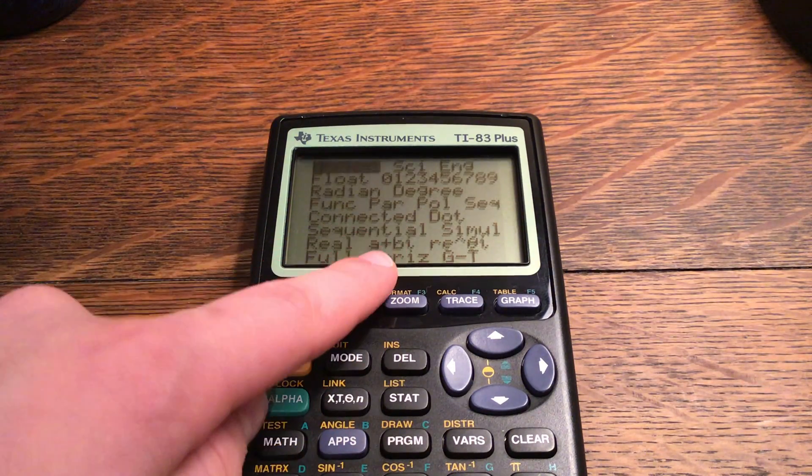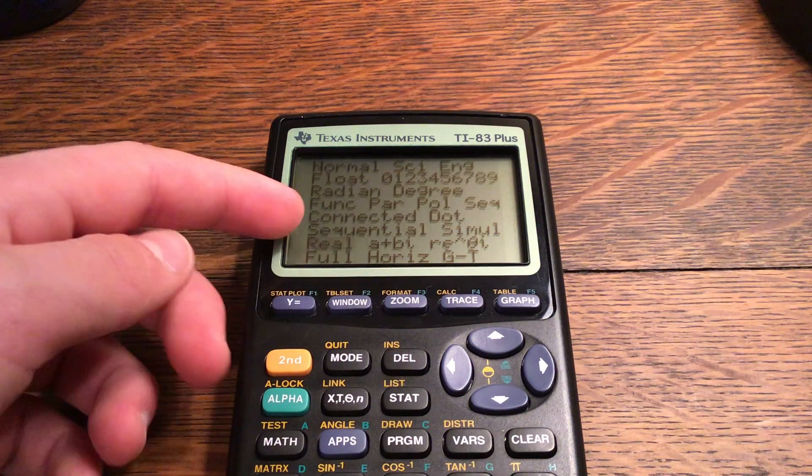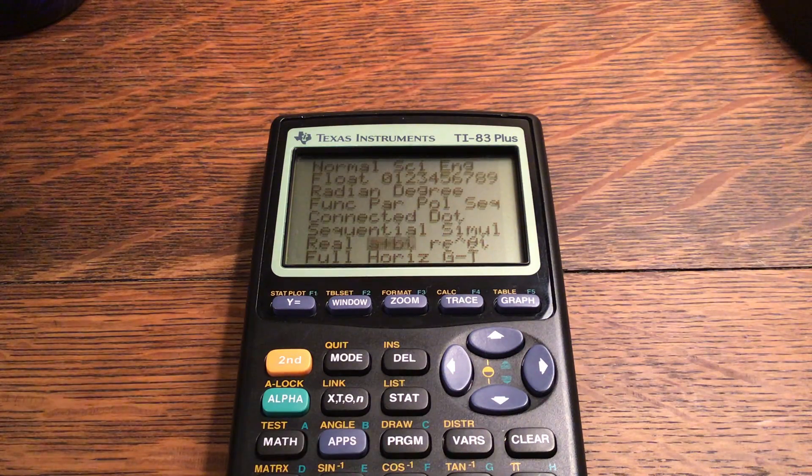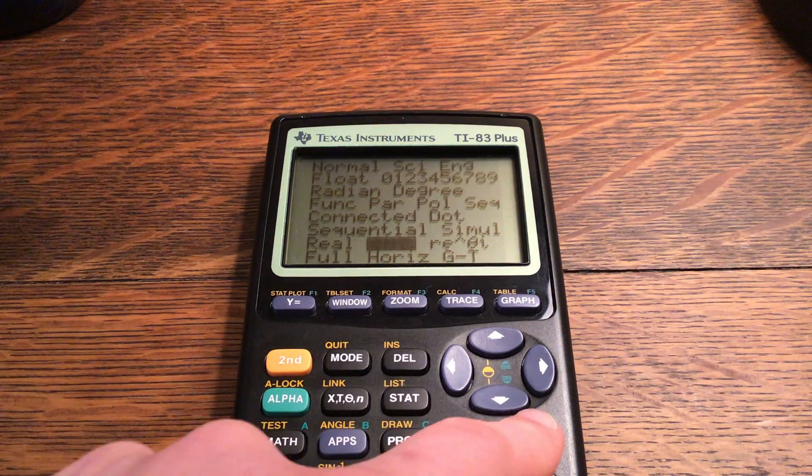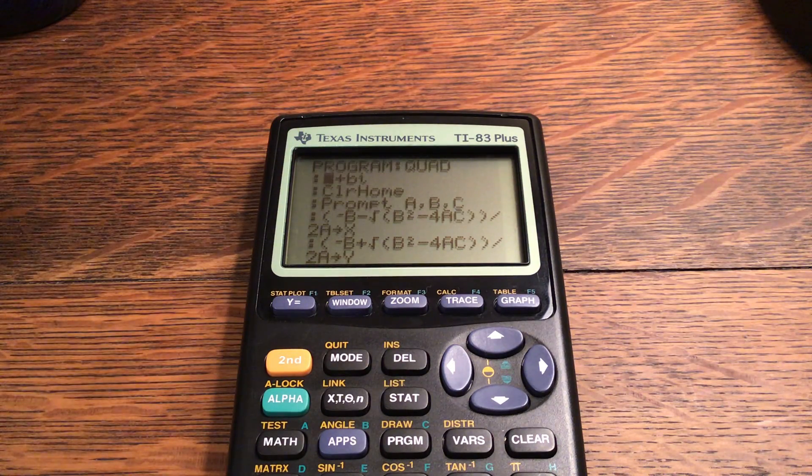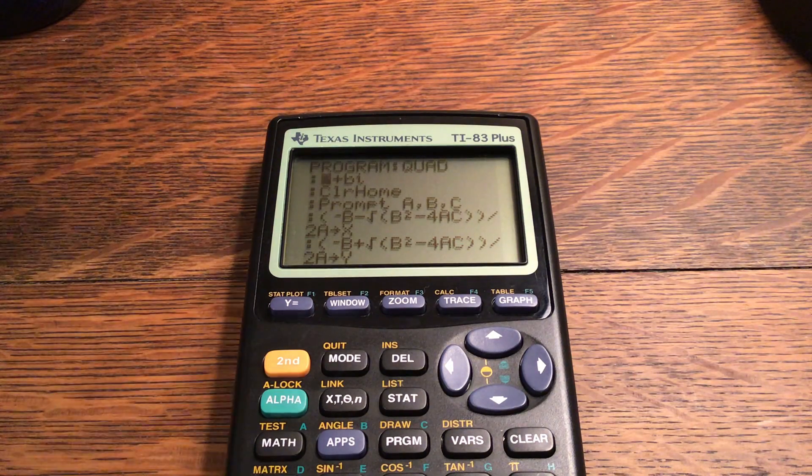Click the mode button and go down to A plus B I, which your calculator will most likely be on real. Then go into A plus B I, click enter. I'm just going to click clear so I don't put another one in. Then clear home to make sure there's nothing on the home screen that will affect it.